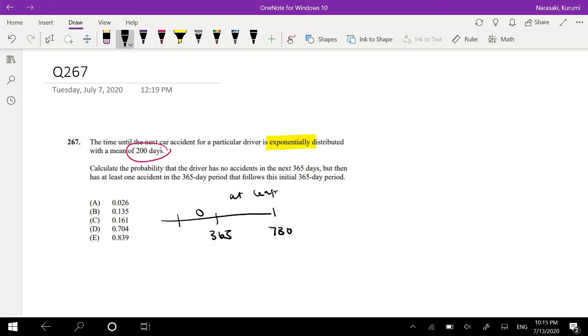So what we can actually do is we know the CDF of an exponential distribution is just equal to, so the CDF of the exponential distribution is just equal to 1 minus e to the negative t over lambda.